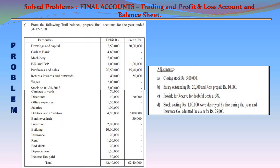Insurance (debit): 20,000. Rent (debit): 1,20,000. Bad debts: 20,000. Depreciation: 1,50,000. Income tax paid: 30,000. Total debits: 62,40,000. Total credits: 62,40,000.